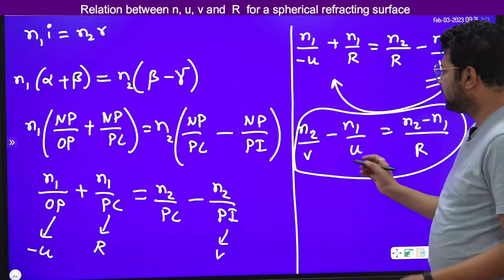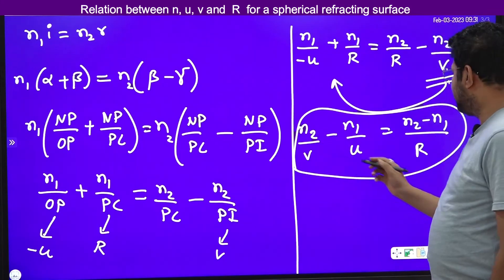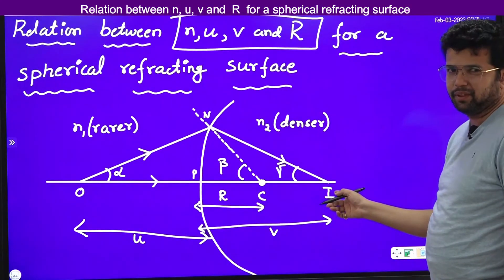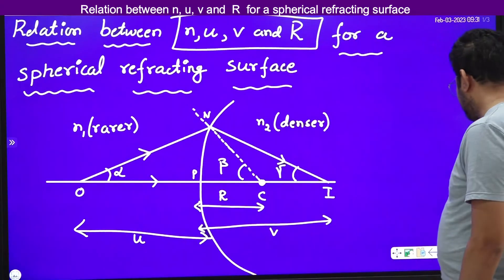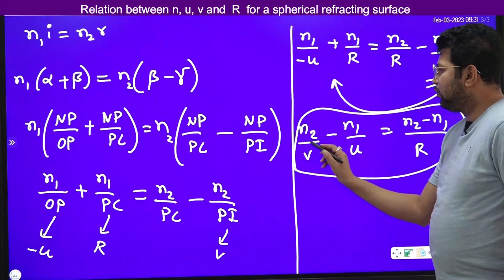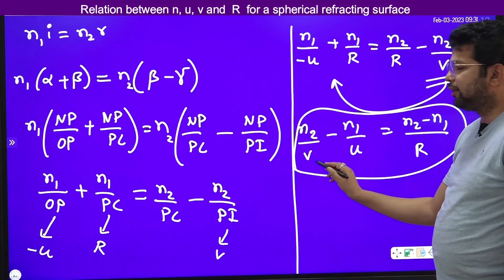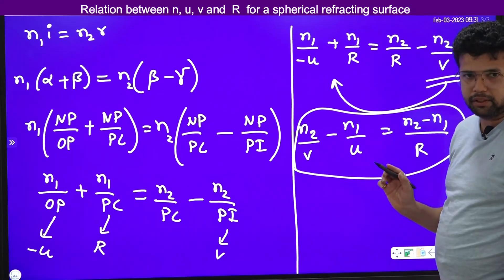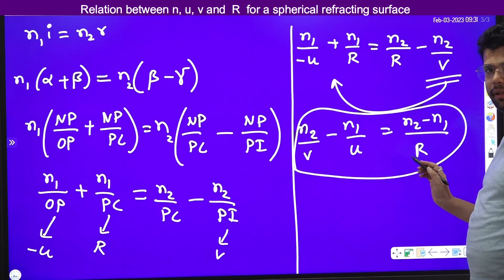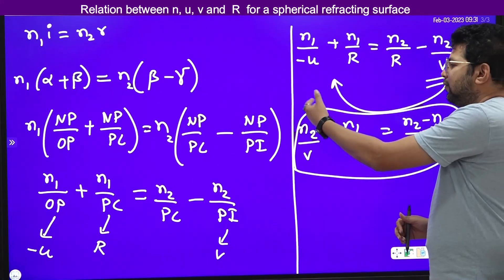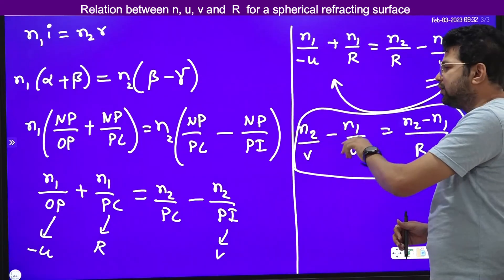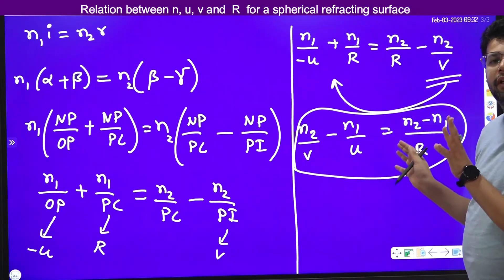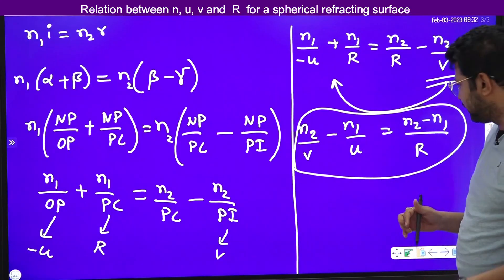How to remember this easily: v is the image distance, n2 is the refractive index of the medium in which the image is located, and n1 is the refractive index of the medium where the object is. So: refractive index of image space divided by image distance, minus refractive index of object space divided by object distance, equals (n2 − n1)/r. Remember this — it will be useful while deriving the lensmaker's formula. Thank you very much.